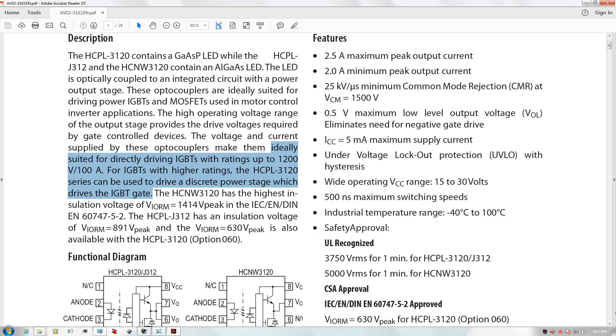As we can see here in the datasheet, it indicates that the HCPL3120 is ideally suited for driving IGBTs with ratings up to 1200 volts and 100 amps. It goes on to say for IGBTs with higher ratings, it can be used to drive a discrete power stage which then drives the IGBT gate. So today I want to show you how to accomplish this, how we can use the HCPL3120 to input to another gate driver which can drive IGBTs with higher ratings than 1200 volts and 100 amps.